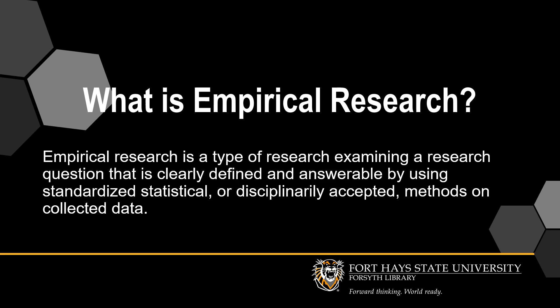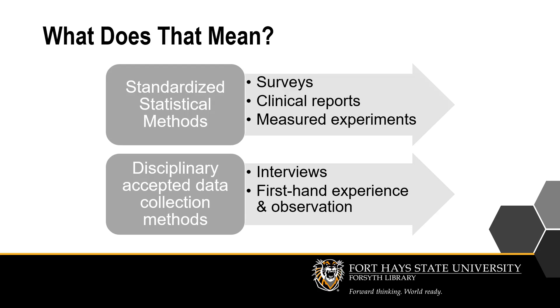Empirical research is one of multiple kinds of research. Also known as Primary Research, it is defined as research that offers new knowledge by the way of data collection. This type of research brings forward new information through research methods used by the author or creator's discipline. It can be something measured either through a survey, lab analysis, or it can come in the form of interviews, a telling of someone's own experience or first-hand observation.